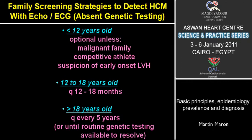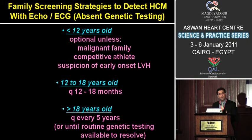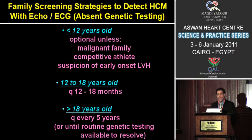This represents the current recommendations for screening of family members with HCM. For those less than 12 years of age, echocardiographic screening is optional unless there are red flags that would prompt earlier evaluation. For those in the adolescent period, echocardiographic screening every year and a half is recommended to detect the development of hypertrophy. For patients who reach 18 years of age without evidence of hypertrophy on echo, we screen every five years up to about the third or fourth decade of life to detect delayed-onset left ventricular hypertrophy.